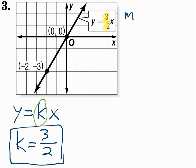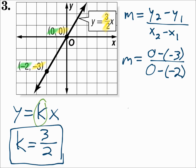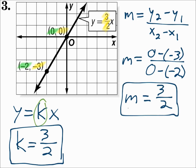To find the slope, use the slope formula. If (0, 0) is the second point, then y2 is 0, minus y1 is negative 3, over x2 which is 0, minus x1 which is negative 2. Simplify that and m equals 3 halves.